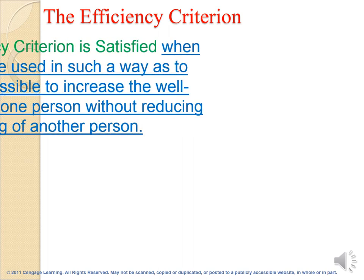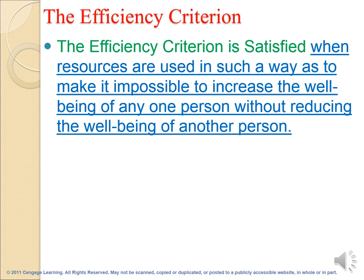The efficiency criteria is a normative criteria for evaluating the effects of using resources on individuals' well-being. The efficiency criteria is satisfied when resources are used in such a way that it is impossible to increase the well-being of anyone without reducing the well-being of another. This means we use our resources in the optimal way, producing the desired output while minimizing wasted effort or expenses.